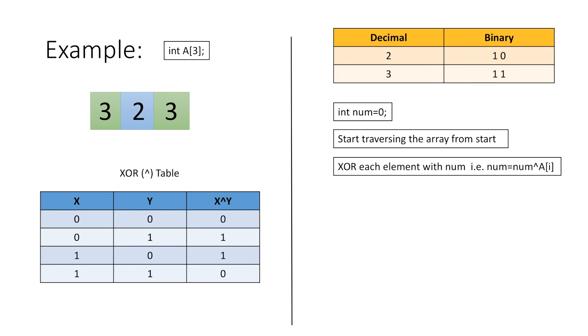When we are done traversing our array, we will see that the variable num will contain the number which is not in pair, that is 2 in our case. Now let's try to understand the logic behind our process.